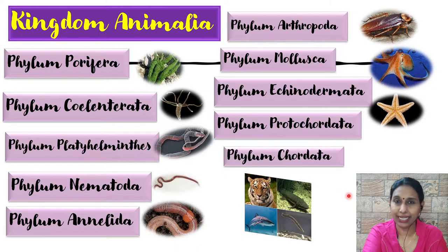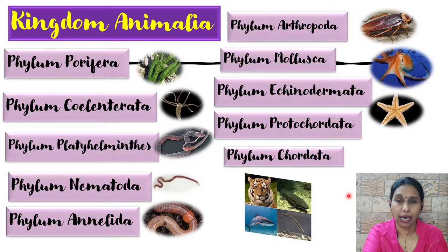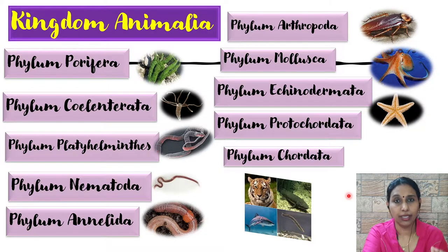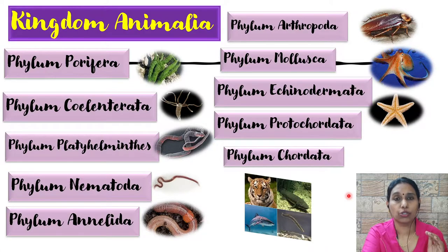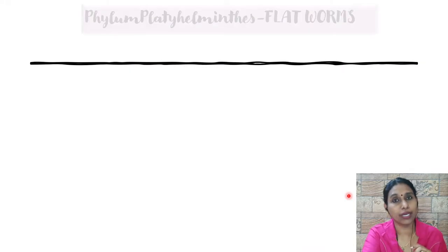The first two we have already completed and we saw that they are very simple in organization — they do not have any coelom, and triploblastic organization has not yet started. We learned that Cnidarians were diploblastic in nature. Now we are going to start with phylum Platyhelminthes, the third phylum of the animal kingdom.